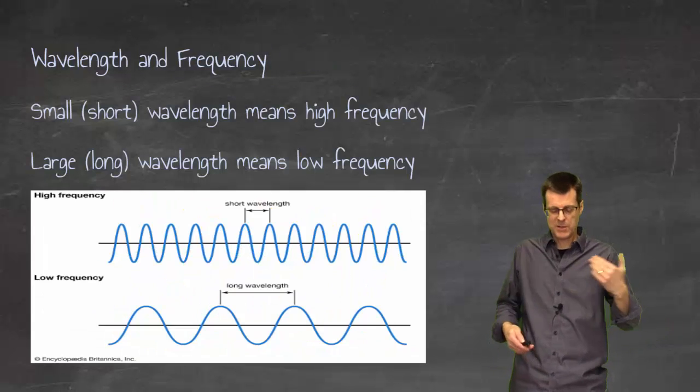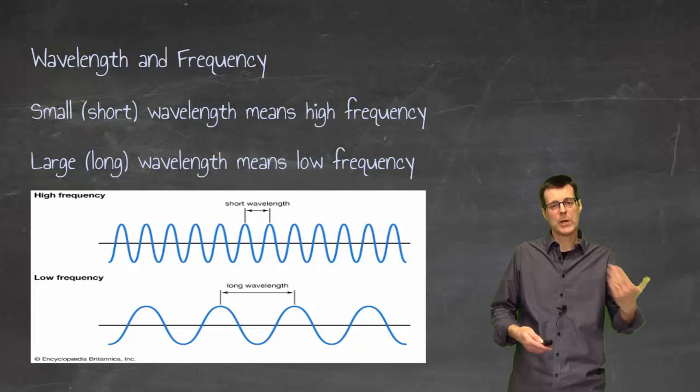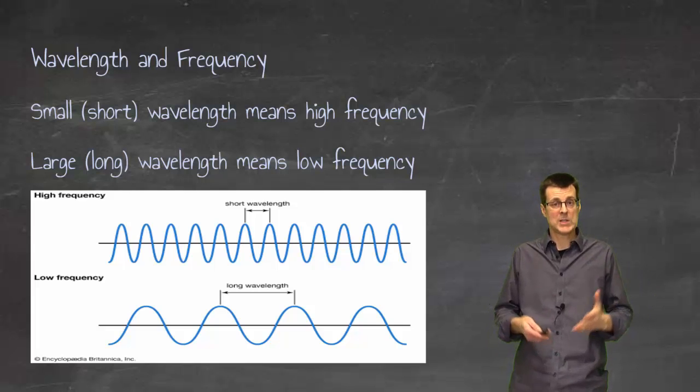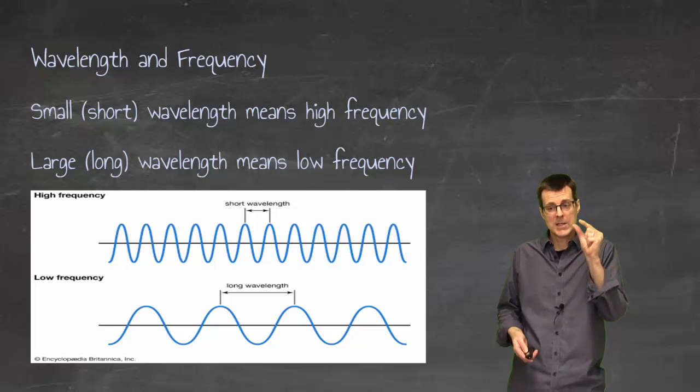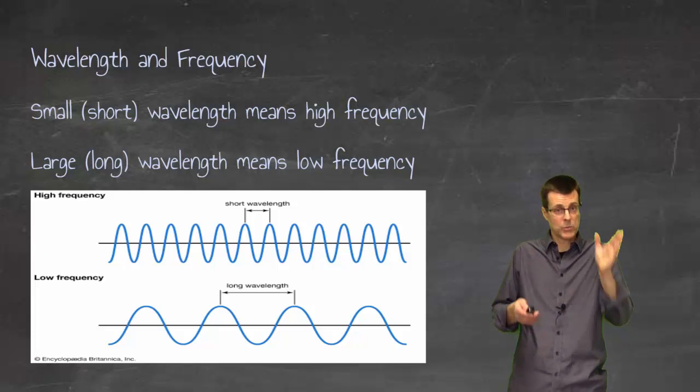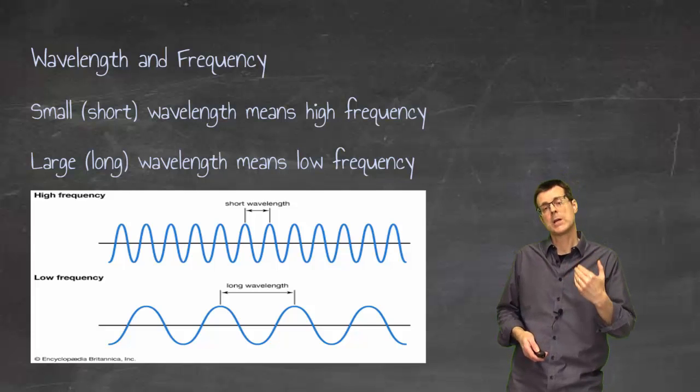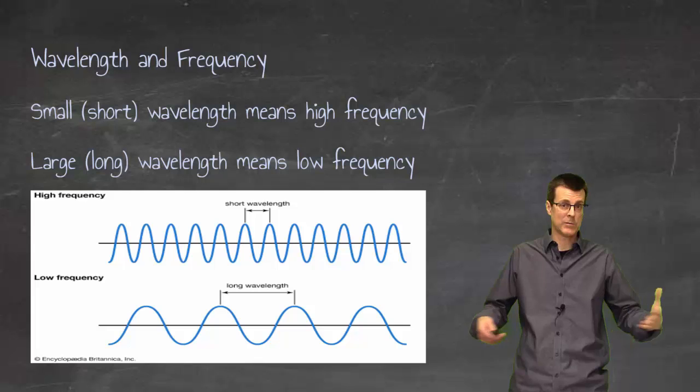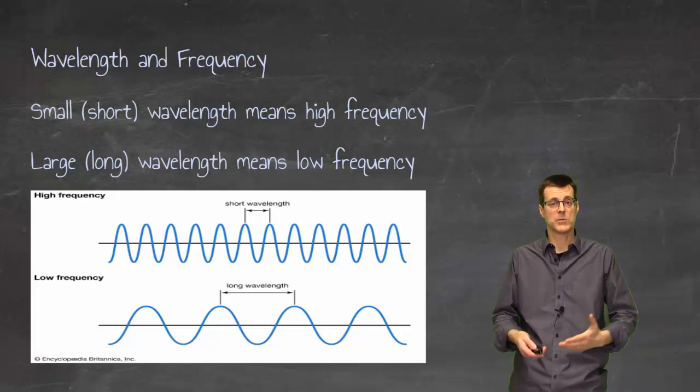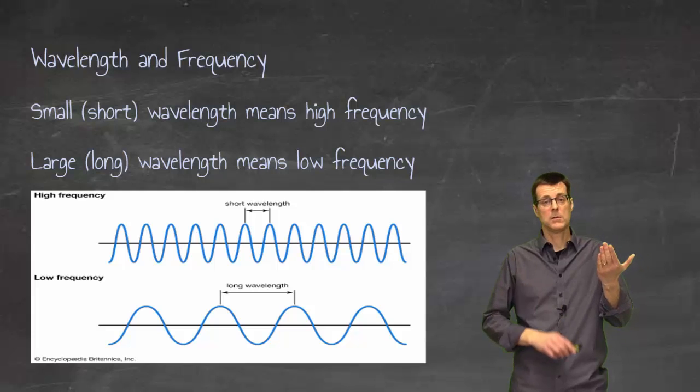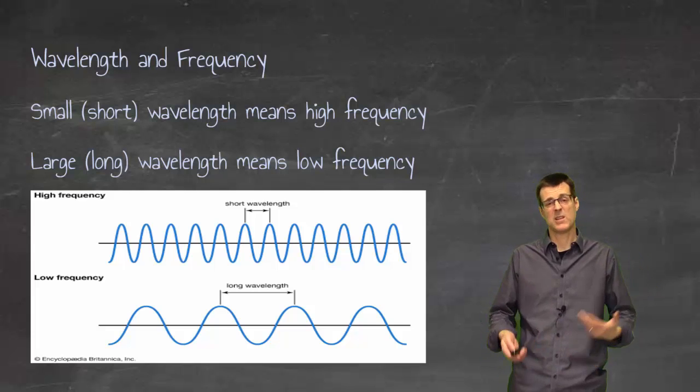The other thing is, it's backwards between wavelength and frequency. So in other words, a short wavelength means a high frequency. If you were counting the peaks in the top one, where the wavelength is very short, you're counting more peaks. If you're counting peaks in the bottom one, where the wavelength is longer, you're counting fewer peaks. So high wavelength, low frequency, and then the other way around.